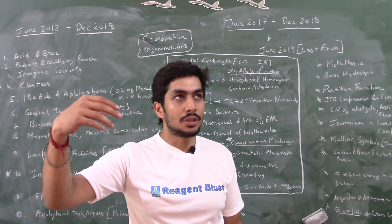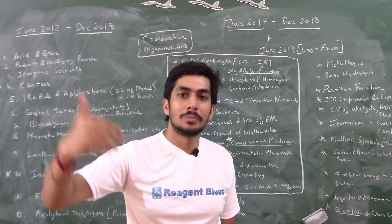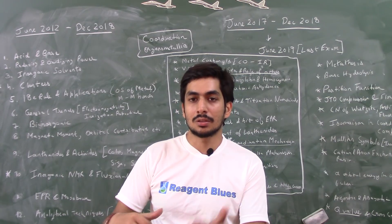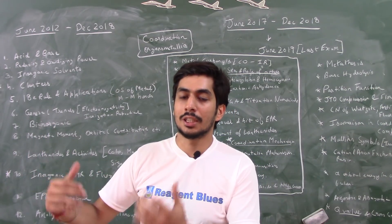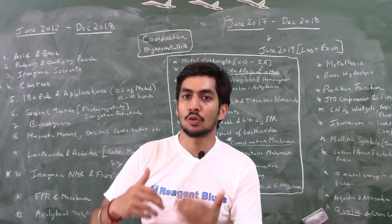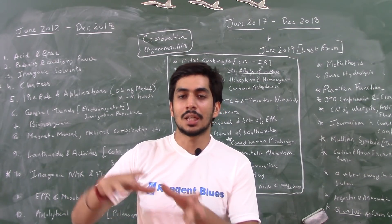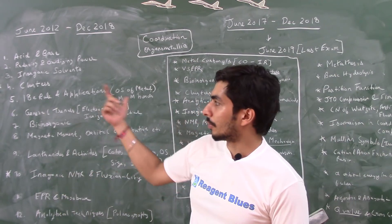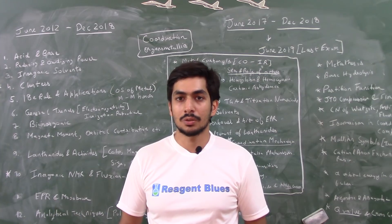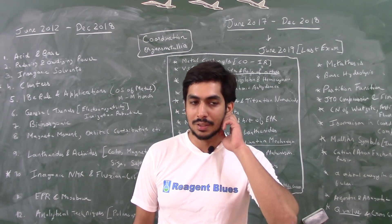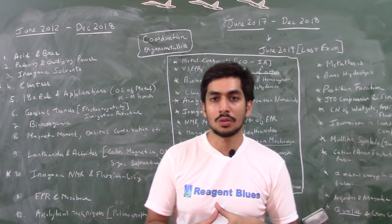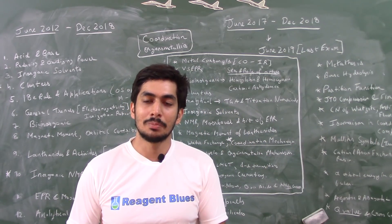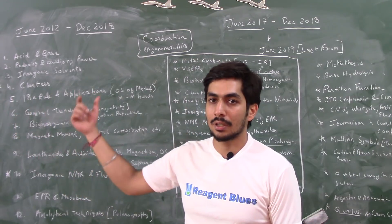Questions are also based on general concepts like oxidizing and reducing power. For example, CrO4 with chromium in its highest oxidation state, then molybdenum, tungsten, and rhenium in their highest oxidation states — four complexes are given and you are asked which has the highest oxidizing power or reducing power. In the June 2018 exam there was also a question based on oxidizing and reducing power.